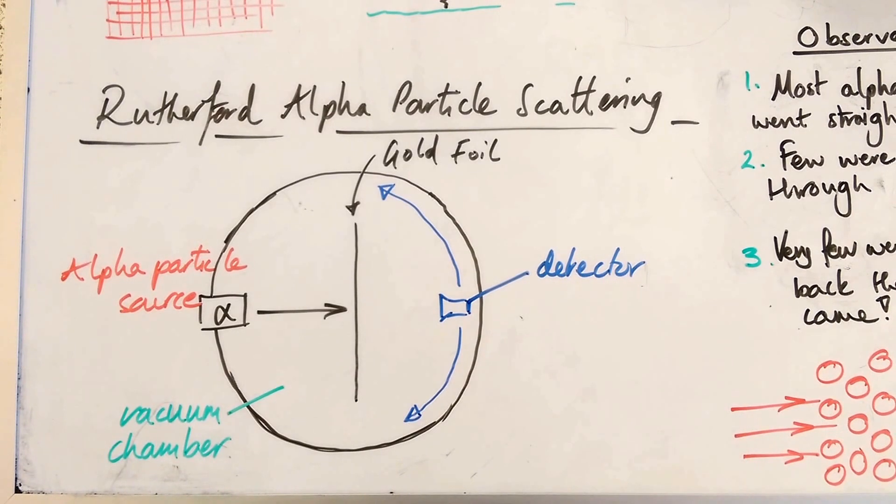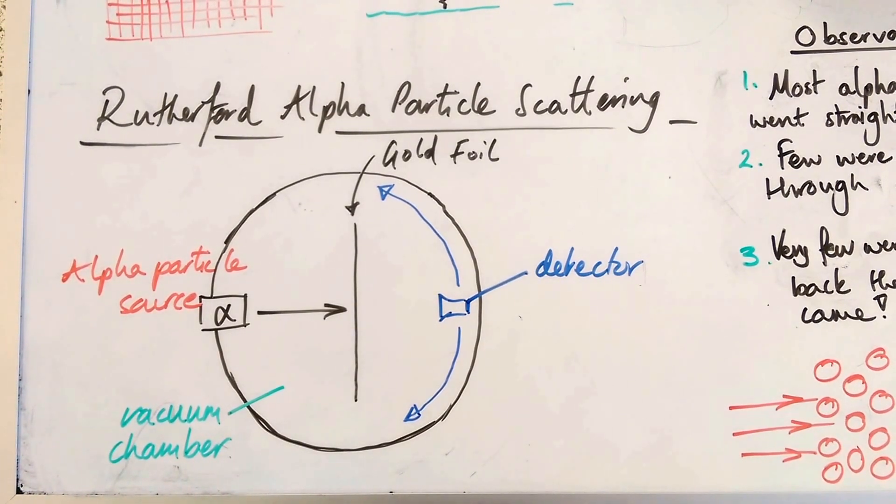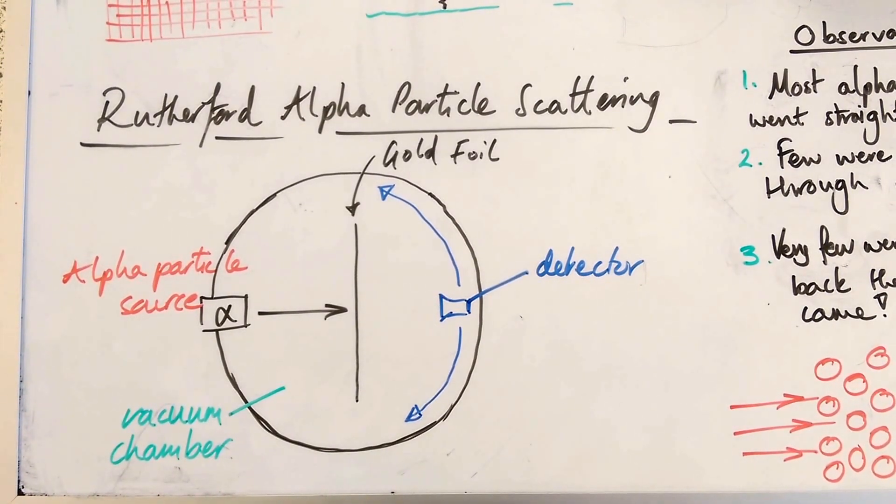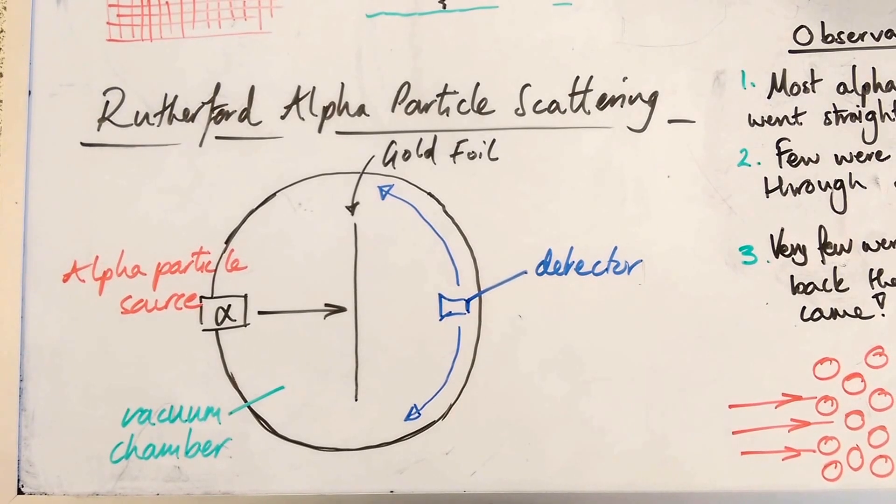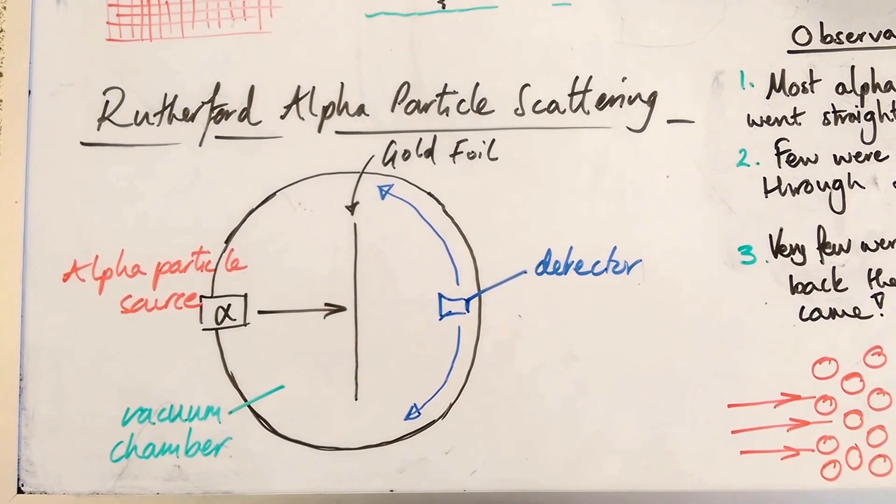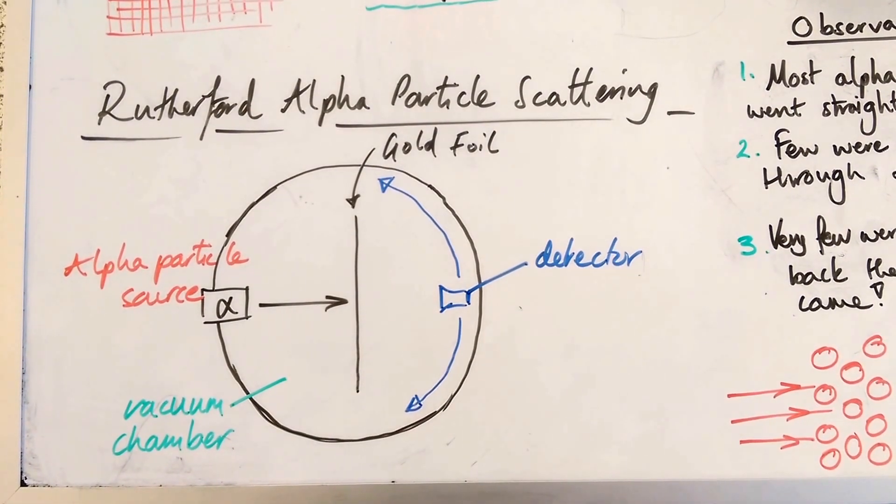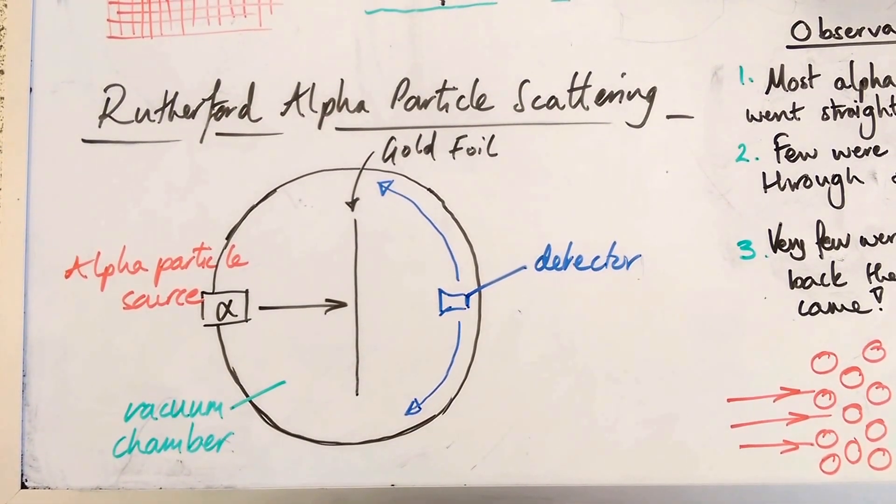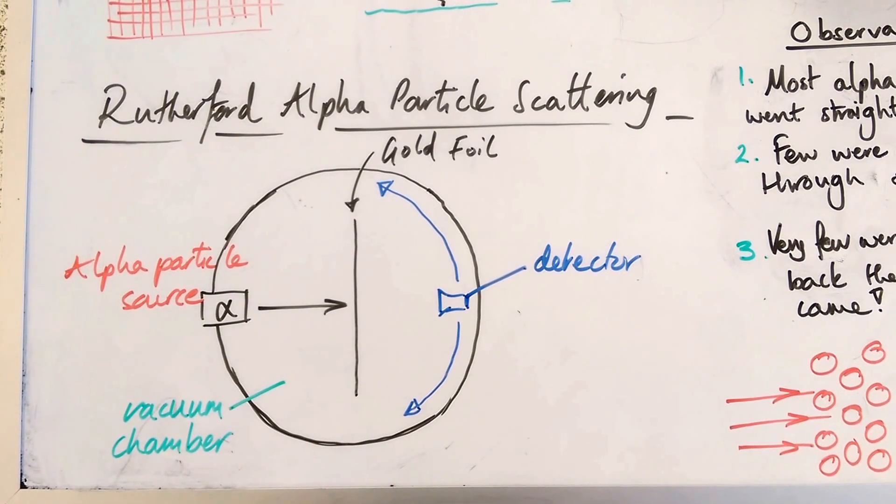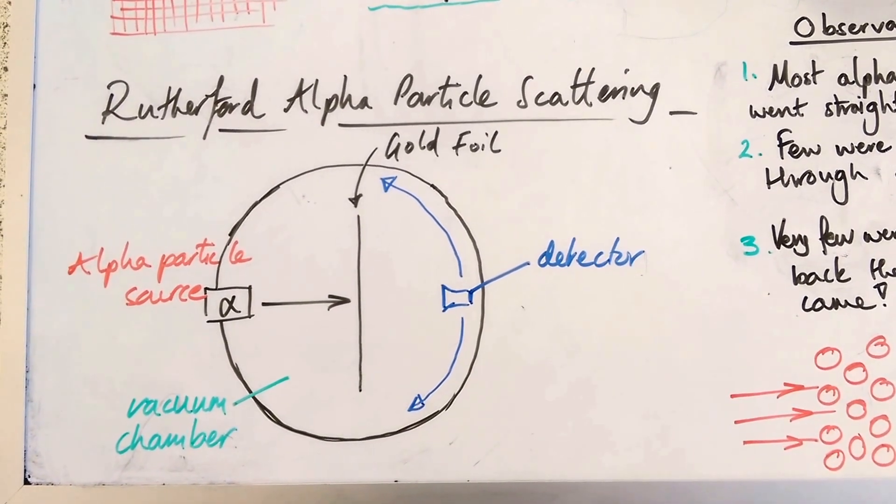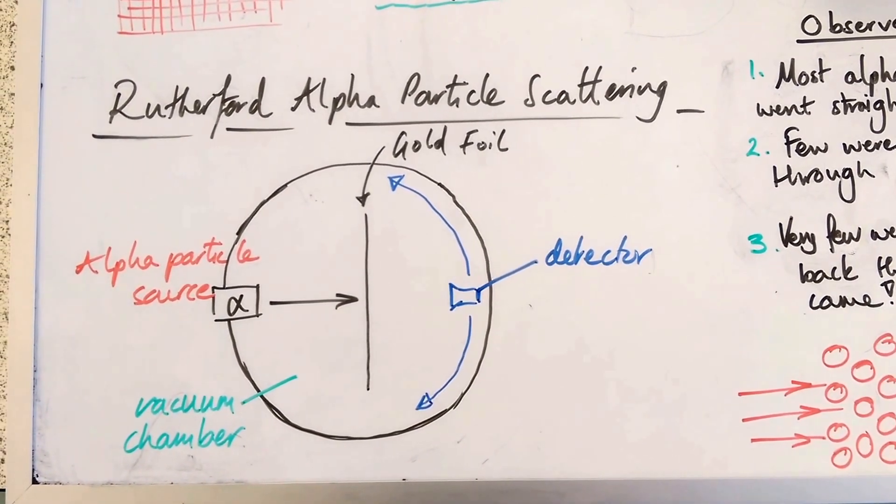But he still hadn't found them all. And he was astounded when he found that some of those alpha particles had not gone straight through, or deflected through small angles, but had deflected back the way they came. He said this was absolutely amazing, as surprising as if you fired an artillery shell at a piece of tissue paper and it bounced back and hit you in the face.